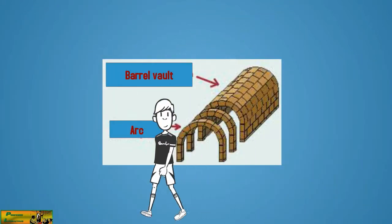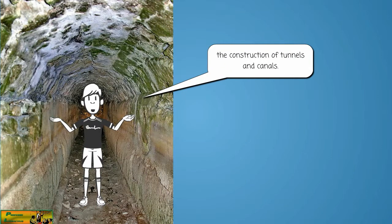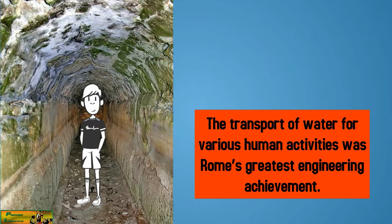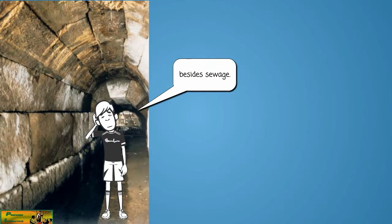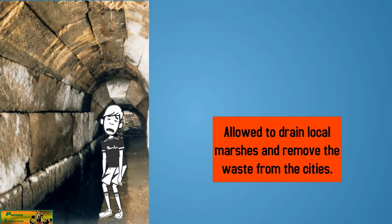From the arch arrived the barrel vault that allowed the construction of tunnels and canals. The transport of water for various human activities was Rome's greatest engineering achievement, besides sewage, which allowed to drain local marshes and remove the waste from the cities.